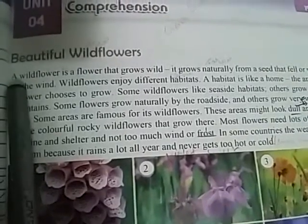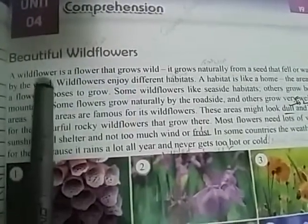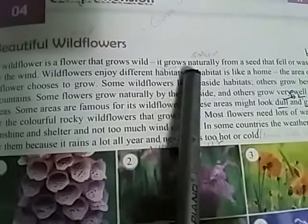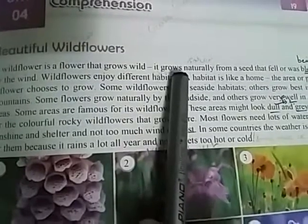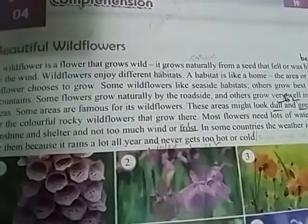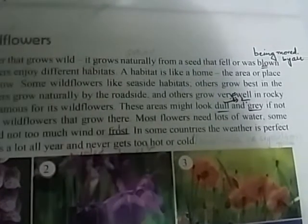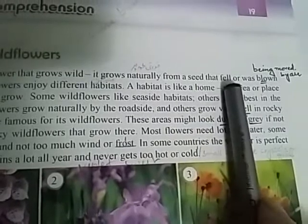Take out your pencil so that you may write the meanings. Put your index fingers. A wild flower is a flower that grows wild — khudrau phool wo phool hota hai jo khud ugte hain. Grows means ugna. It grows naturally — yeh qudrati taur par ugta hai. Grow is the first form; grows is the present and definite form. It grows naturally from a seed — yeh qudrati taur par beej se ugta hai. Seed means beej (بیج).